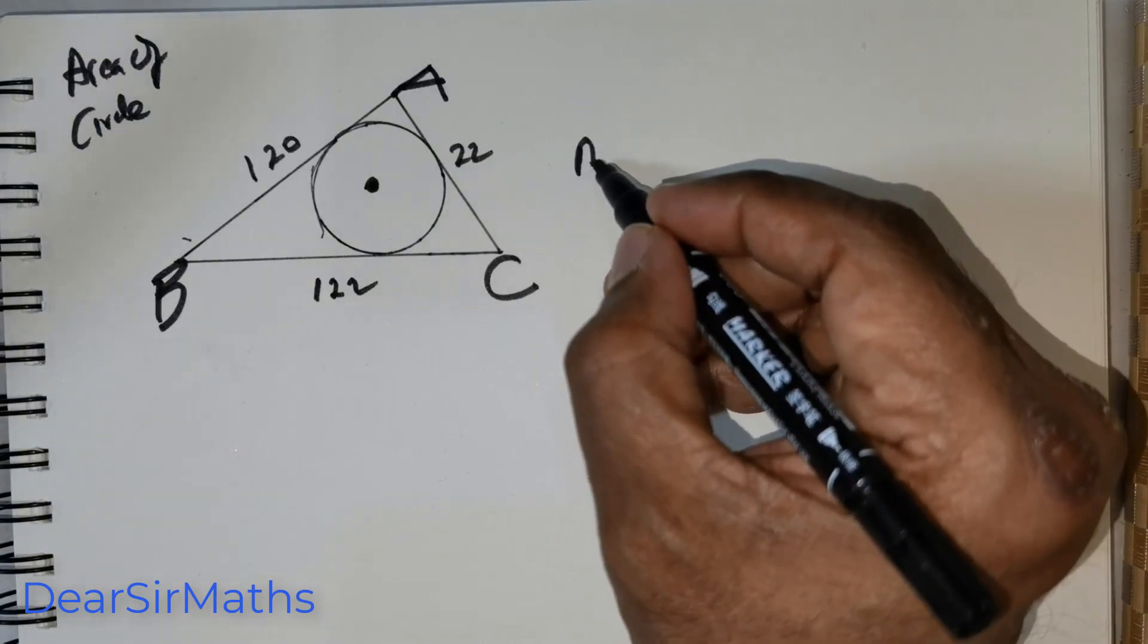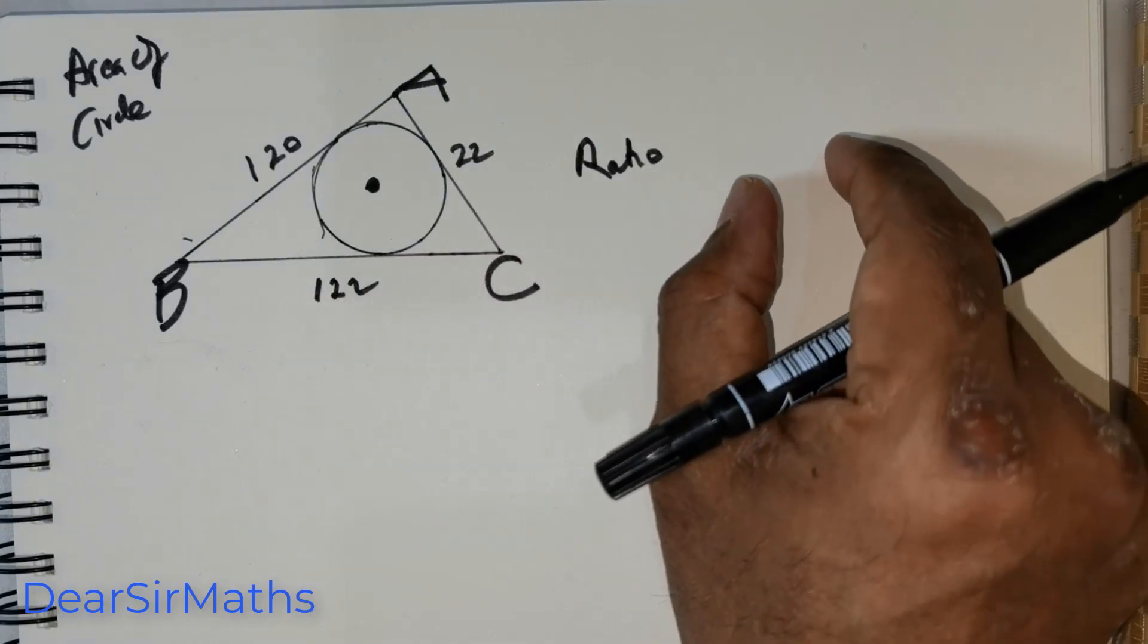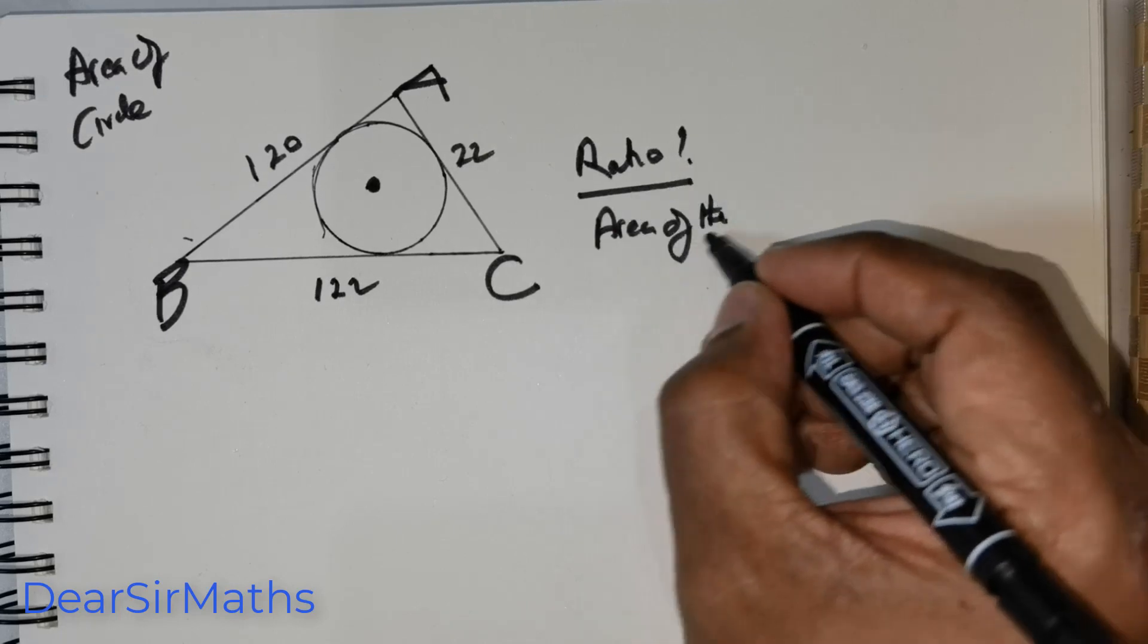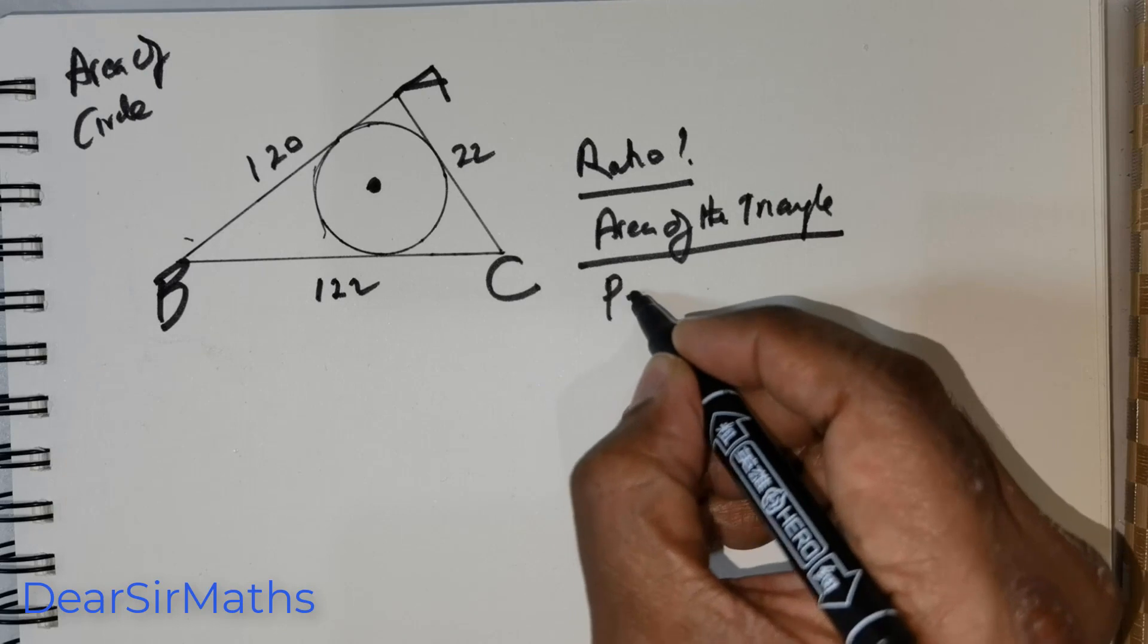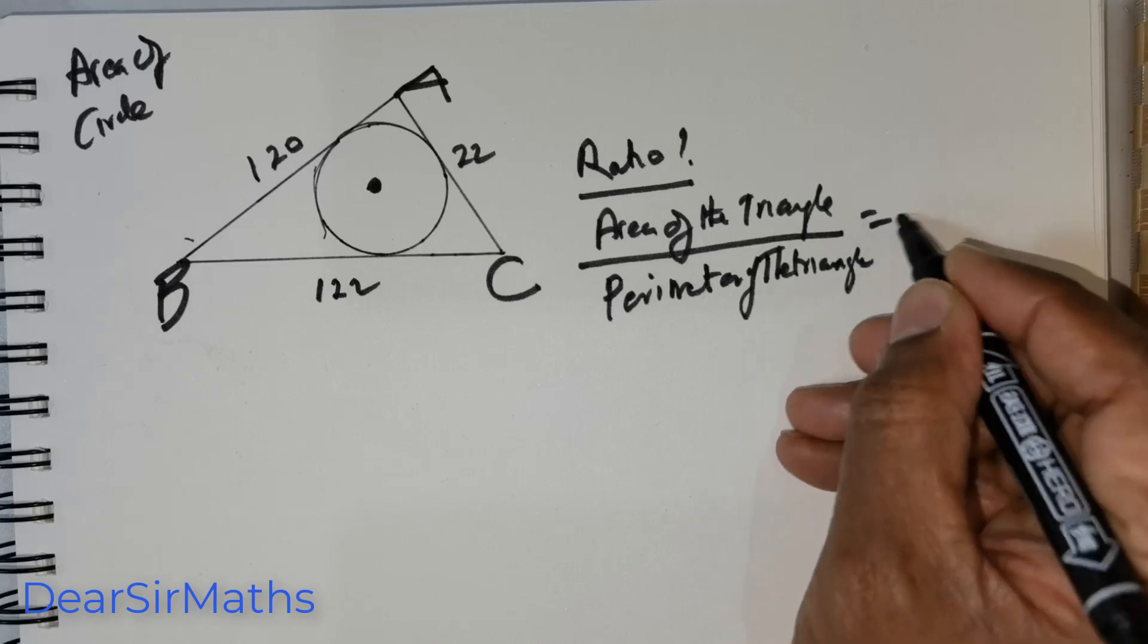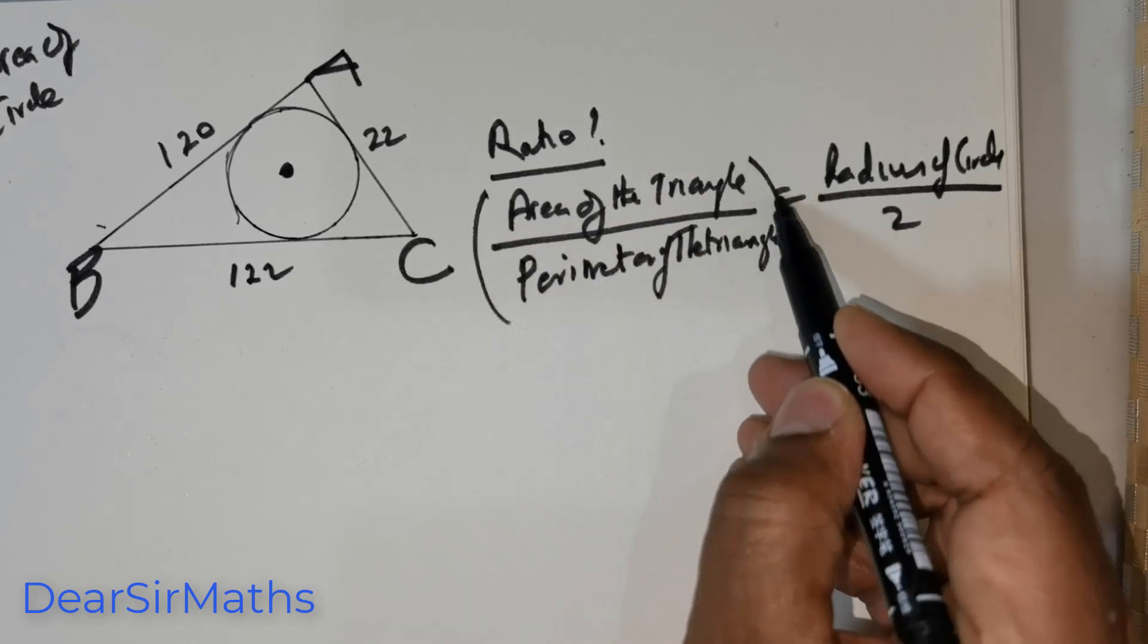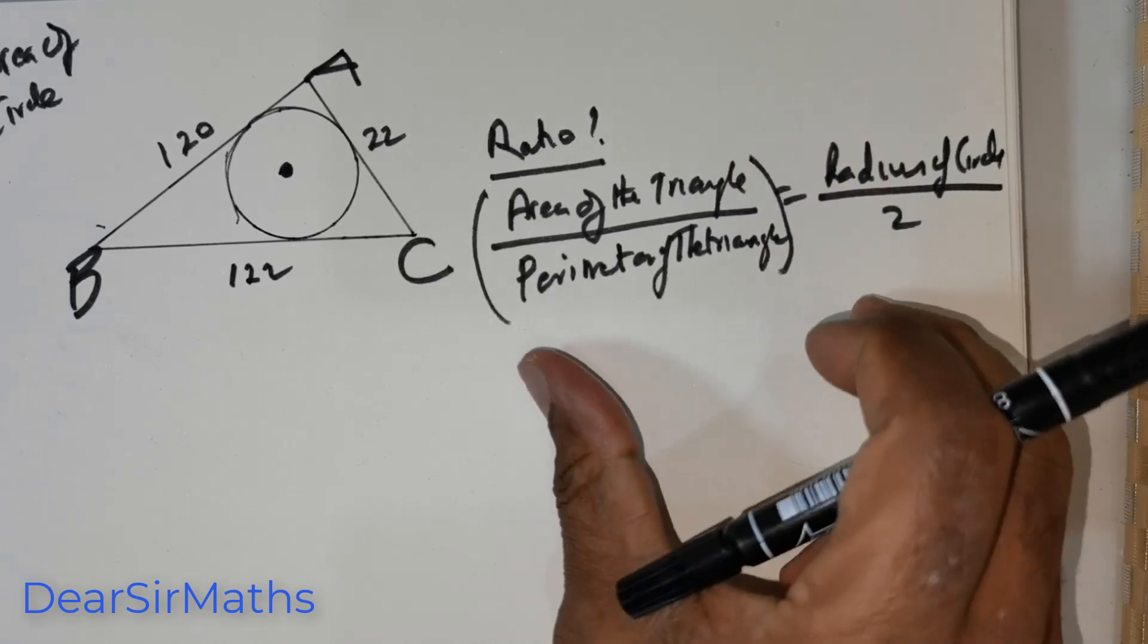we got a ratio connecting the triangle with the radius of the circle. The formula is, the ratio of the area of the triangle to the perimeter is equal to the radius of the circle divided by 2. So, the ratio of the area of the triangle to the perimeter is equal to the radius of the circle divided by 2.